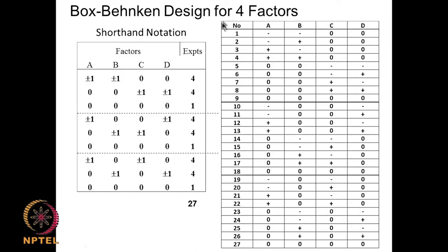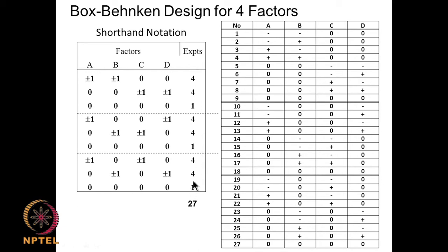For 4 factors (A, B, C, D) in the Box-Behnken design: A ±, B ±, C and D at 0 gives 4 experiments. Then A and B at 0, C and D ± gives 4 experiments plus 1 central point. Then A and D ±, B and C at 0 is 4 experiments; B and C ±, A and D at 0 is 4 more. Then A ±, C ± gives 4; B ±, D ± gives 4; plus another central point. These all add up to 27 experiments.